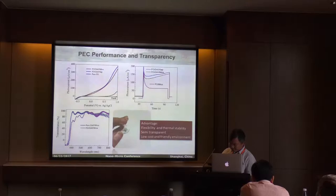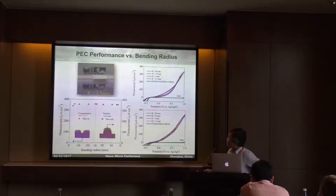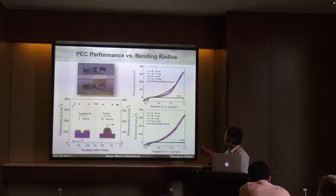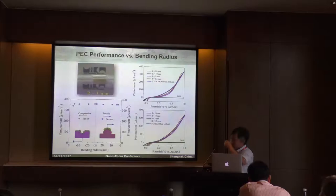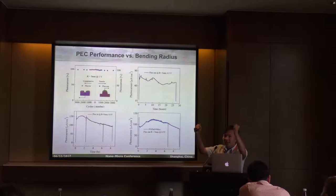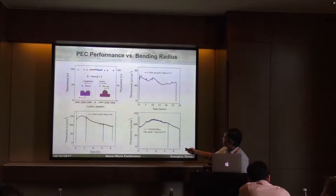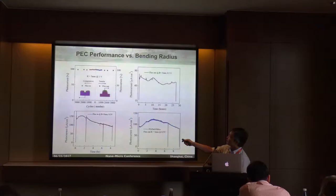We checked what happens when you really bend the sample. You can bend the sample with different bending radii — one direction is flex in, one is flex out. We checked the photocurrent, and for both flex in and flex out, the smallest bending radius we can achieve is about 3.5 millimeters, but you still maintain very stable PEC performance. That means for this kind of PEC cell, you can really bend it. We also did mechanical cycling — we bent the sample 3,000 times, once for flex in and once for flex out — and you can see the photocurrent remains stable.